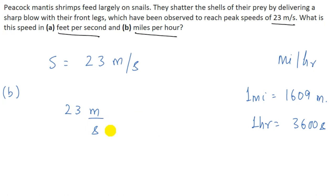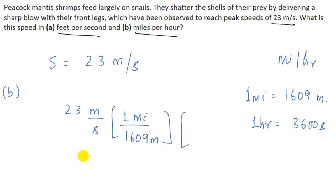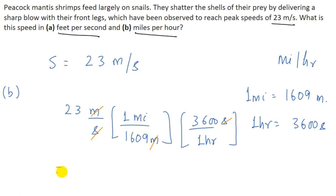First we have to convert meters into miles. We know 1609 meters equals one mile. Then we convert seconds into hours: 3600 seconds equals one hour. From here, this meter and meter cancel, this second and second cancel, and we are left with miles per hour. That would be nearly equal to 51 miles per hour. So this is the required answer.